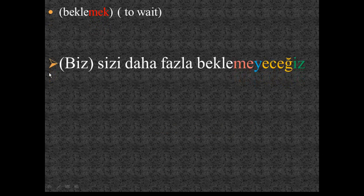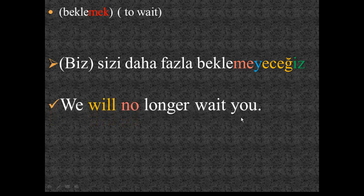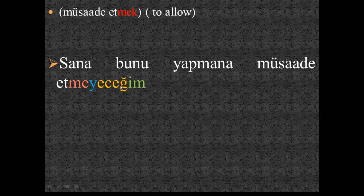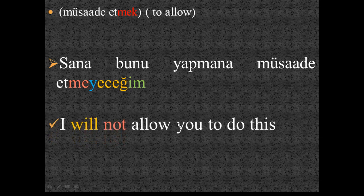'Beklemek': 'Biz sizi daha fazla beklemeyeceğiz' — we will no longer wait for you. 'Müsaade etmek': 'Sana bunu yapmana müsaade etmeyeceğim' — I will not allow you to do this. 'Sana' = to you, 'bunu yapmana' = to do this, 'müsaade etmeyeceğim' = will not allow.